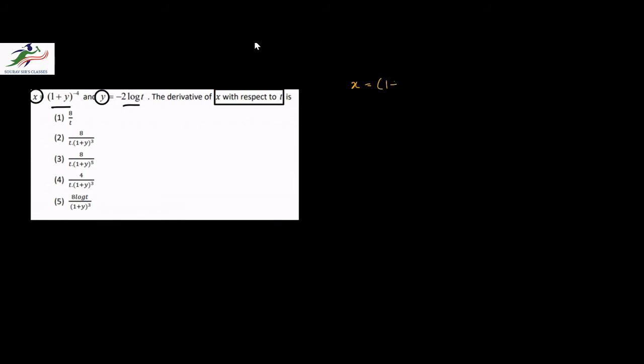In the next question we are given two variables: x in terms of y, and y in terms of t, and we are asked to find the derivative of x with respect to t. So we have to write x in terms of t. x is equal to 1 plus y, whole to the power minus 4, and y is minus 2 log t. So we can write x as 1 minus 2 log t, whole to the power minus 4.